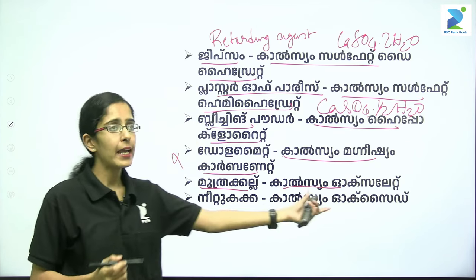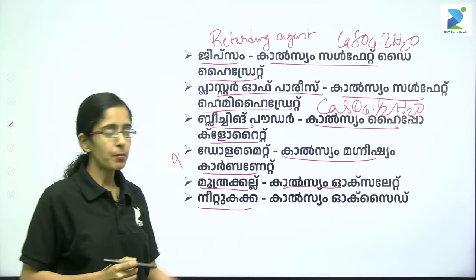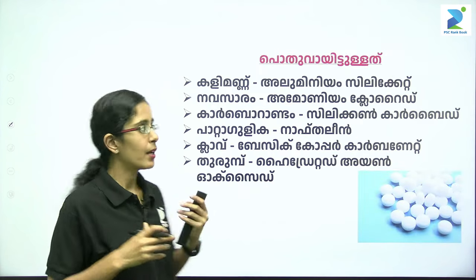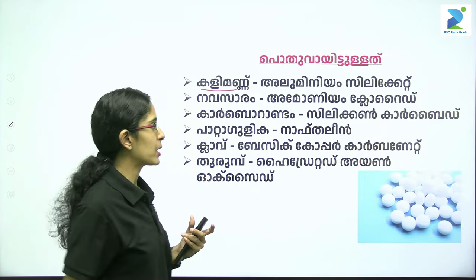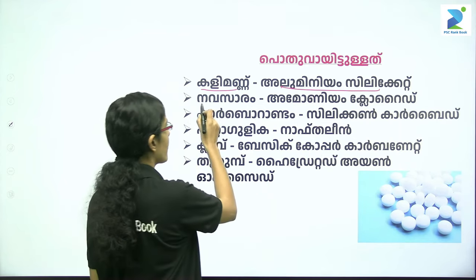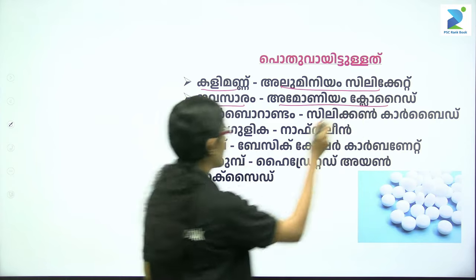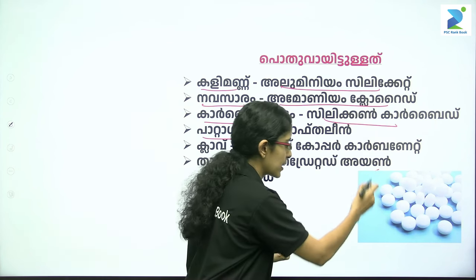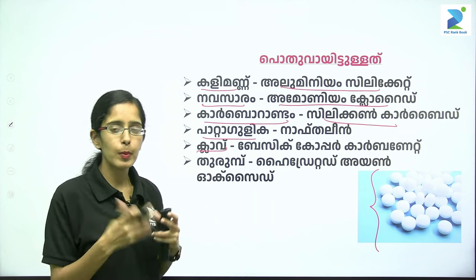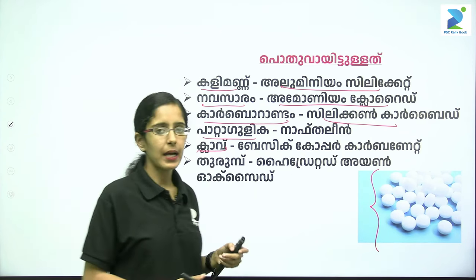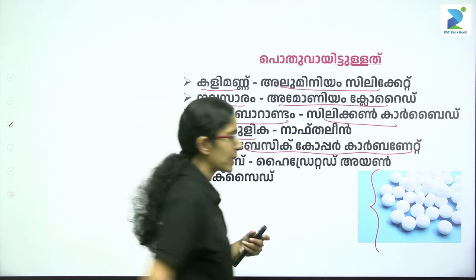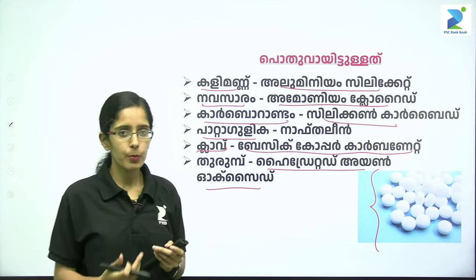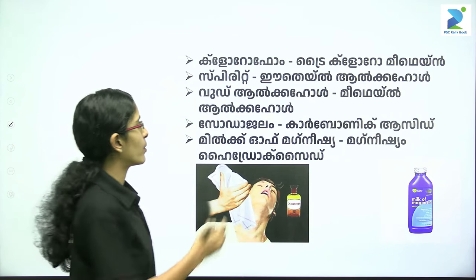Calcium oxide — the chemical name is calcium oxide. We use it with aluminium silicate. Other compounds include ammonium chloride, silicon carbide, and basic copper carbonate.